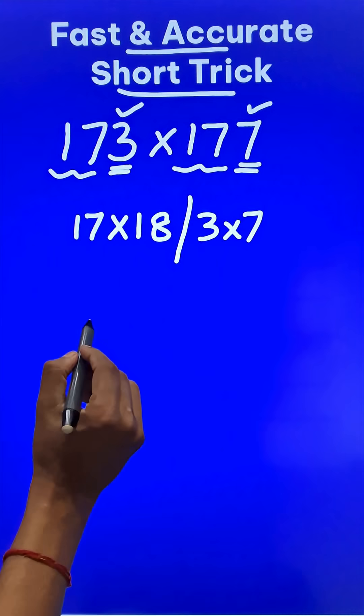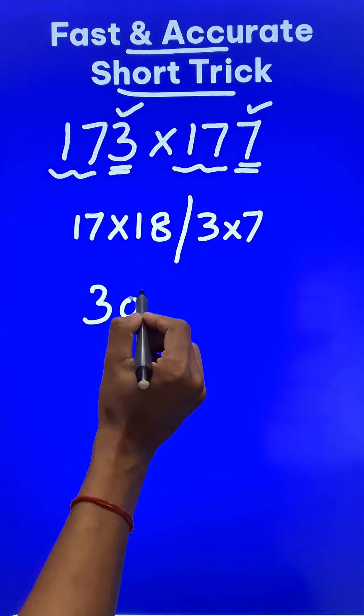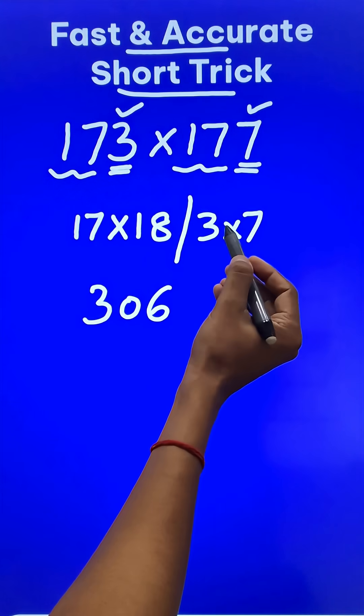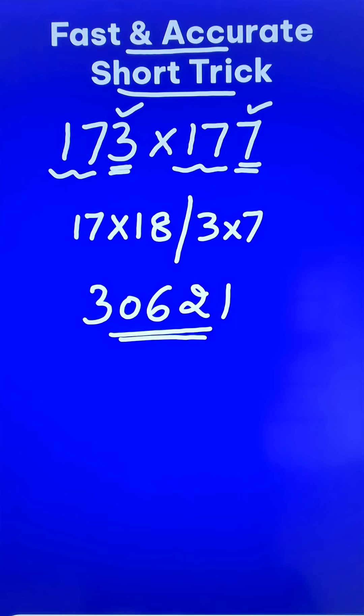So 17 times 18 is 306, and suffix 21 to this result. You will get your answer.